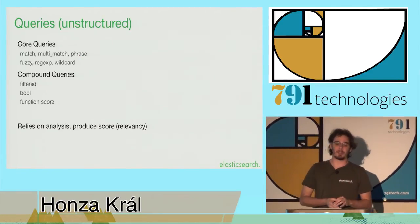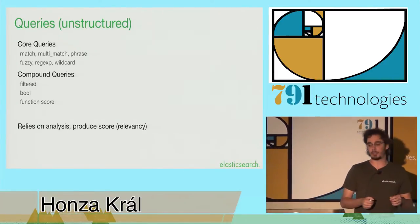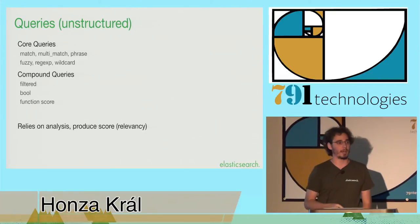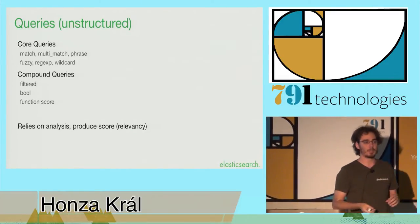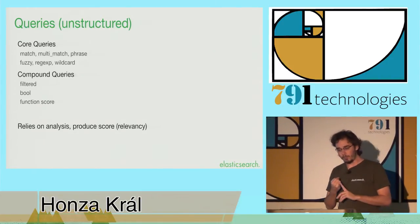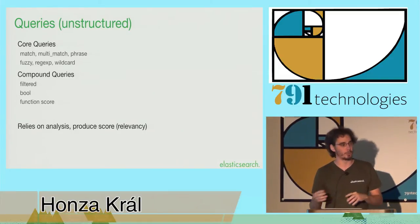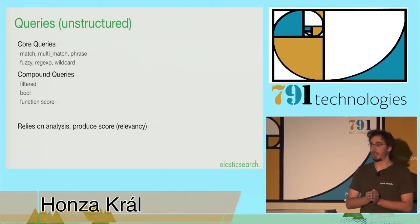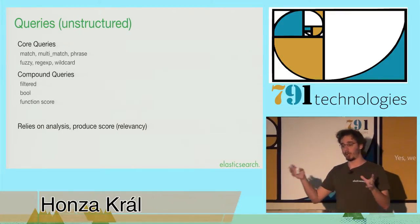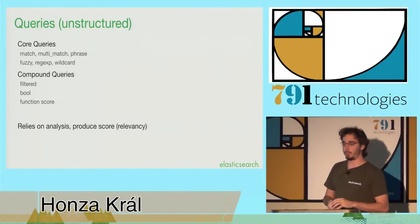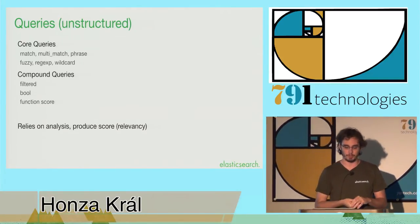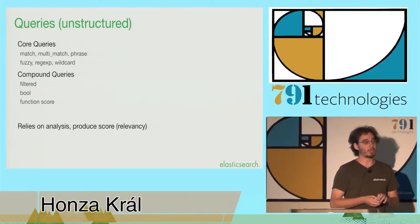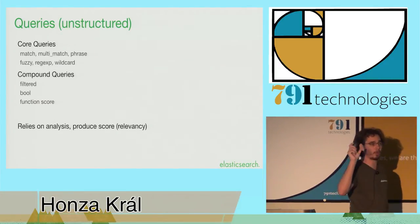So queries represent the unstructured part of Elasticsearch. It is the full text. It is the part that not only tells you which document matches your query, but also how well does it match. Is this a good match or so-so? So that's why we have several different types. We have match queries, which do what you would expect. In fact, we have fuzzy queries that are able to take into account typos in form of matching across Levenshtein distance, so across different mispronunciations or mistypes of the word. We also have queries like regexp or wildcard, which allows you to do partial matches. You also have compound queries.